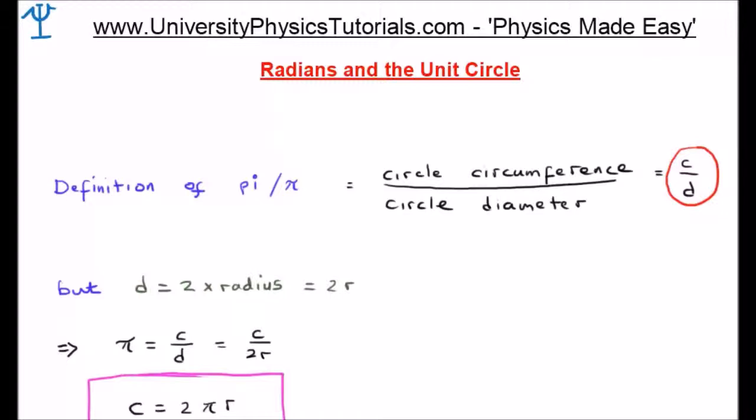And very quickly using this simple definition, we're able to get some very useful results. First of all, we know that the diameter of a circle is twice the radius of the circle. In other words, d is equal to two times the radius. By inserting this into our definition of pi and rearranging, we find that the circumference of a circle is equal to twice pi times the radius.